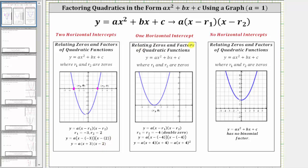Or we can have one horizontal intercept. Notice how the graph touches the horizontal axis at x equals negative four and then bounces back. When this happens, we say the zero x equals negative four is a double zero, and we let r₁ and r₂ both equal negative four. This gives us two factors of x minus negative four, which simplifies to two factors of x plus four, or the quantity x plus four squared.